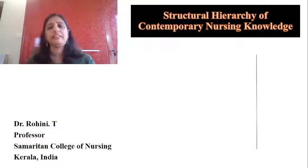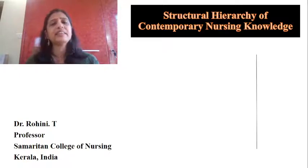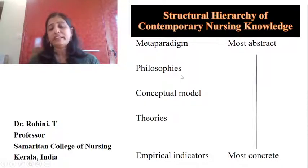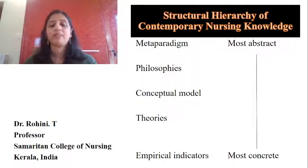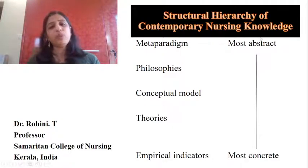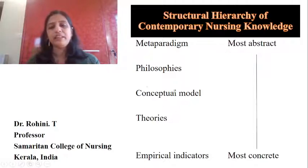According to Fawcett, she believed in a structural hierarchy of contemporary nursing knowledge. She believed nursing knowledge mainly depends on five main indicators: first is meta-paradigm, next is philosophy, then comes conceptual model, then theories, and finally empirical indicators. She described this as the structural hierarchy of contemporary nursing knowledge, saying that the most abstract one is the meta-paradigm and the most concrete one is the empirical indicator. Today's topic lies somewhere in between — where we find the conceptual model and the theory.